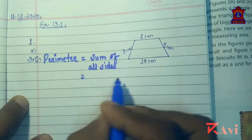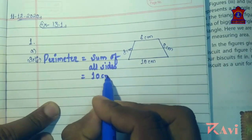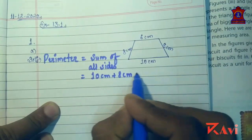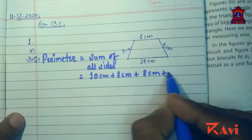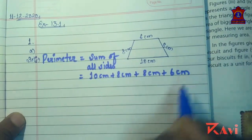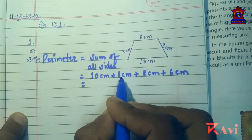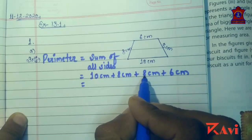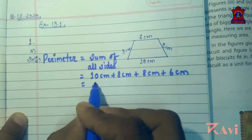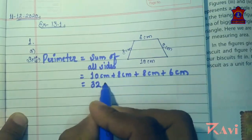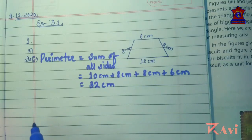Sum of all sides: write 10 cm plus 8 cm plus 8 cm plus 6 cm. Now add all: 10 plus 8 is 18, 18 plus 8 is 26, 26 plus 6 is 32. So the perimeter of this figure is 32 centimeters.